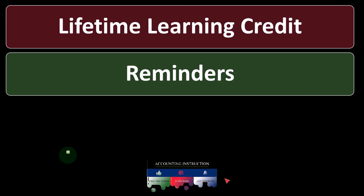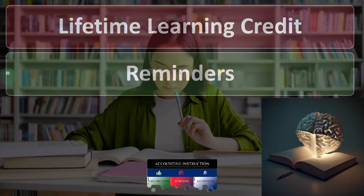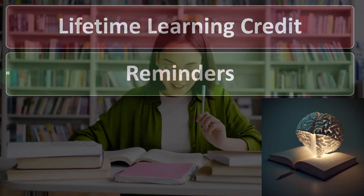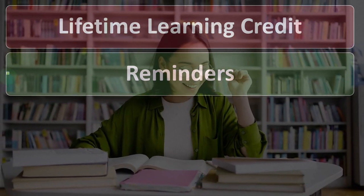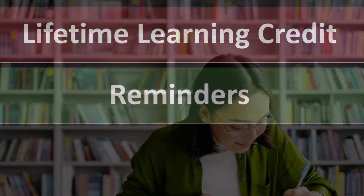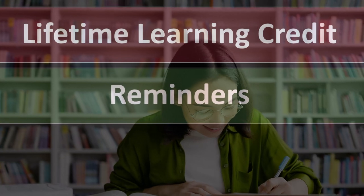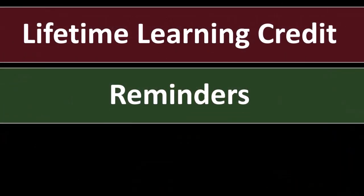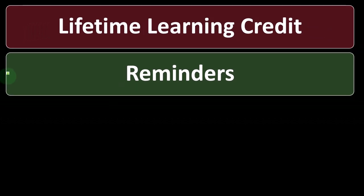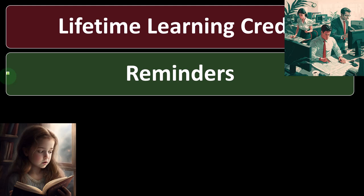We're now on the Lifetime Learning Credit, thinking about the educational tax credits as we do so. You'll recall from prior presentations that there are basically two credits: the American Opportunity Credit and the Lifetime Learning Credit. The American Opportunity Credit usually results in a bigger benefit but is more restrictive to qualify for. If you don't qualify for that one, then we default to the Lifetime Learning Credit, which is our focus at this time.